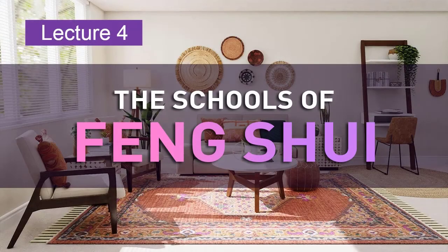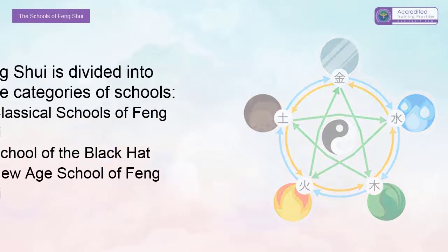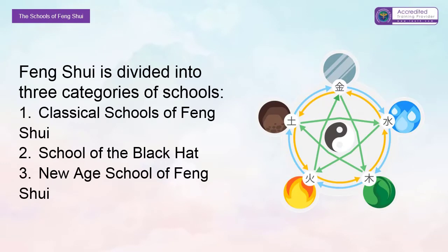Lecture four: The Schools of Feng Shui. Feng shui is divided into three categories of schools: one, classical schools of feng shui; two, school of the black hat; three, new age school of feng shui.